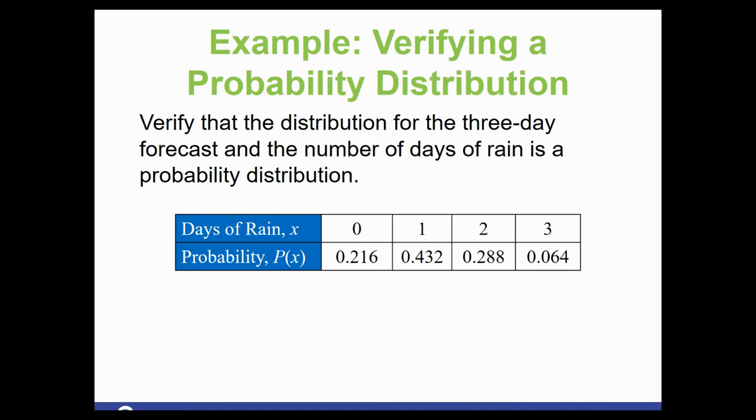So here's a couple problems just verifying if something is a probability distribution or not. So keep in mind, you're checking, are all of my probabilities between 0 and 1 inclusively? And do my probabilities add up to 1? So this is between 0 and 1. This one's between 0 and 1. This one's between 0 and 1. And this one's between 0 and 1. So we met the first condition.